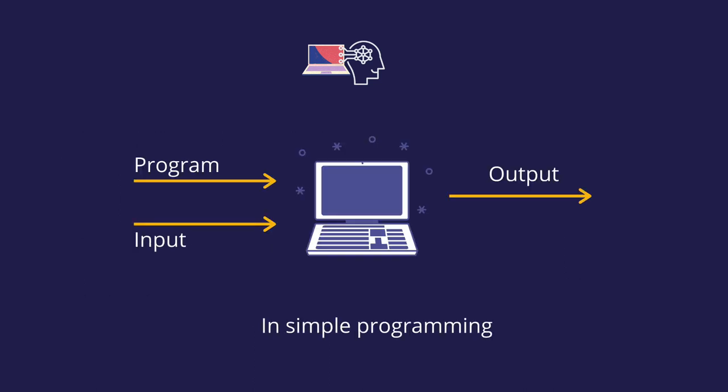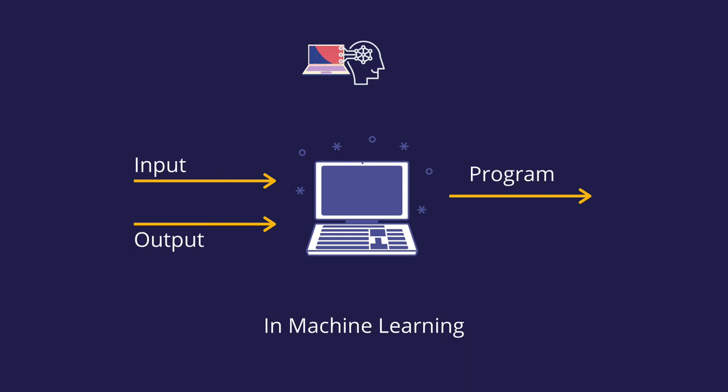So when we write a traditional program, we provide the computer with a program and an input, and the computer executes that program to produce an output. But in machine learning, we provide the computer with an input and the output for that input, and it is the duty of the computer to make a program — or a logic, or in machine learning terms, a model — that works based on those inputs and outputs to train itself, so that with new inputs it can generate output using that model. The computer cannot do this from just a single input. Let's take an example to understand how this input-output works to create the model.